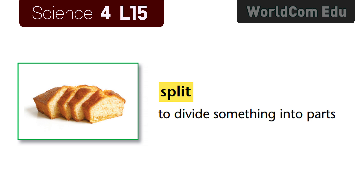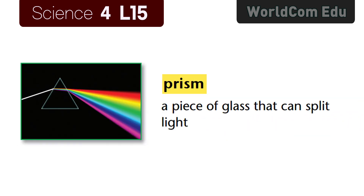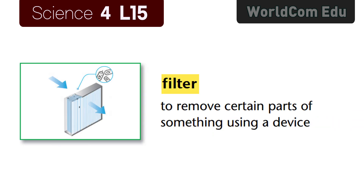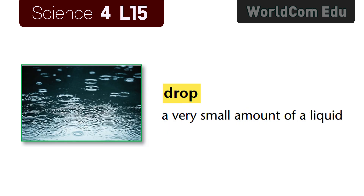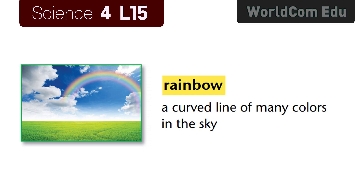Lesson 15: Light and Colors. Split — to divide something into parts. Prism — a piece of glass that can split light. Filter — to remove certain parts of something using a device. Block — to stop movement through or past something. Drop — a very small amount of a liquid. Rainbow — a curved line of many colors in the sky.